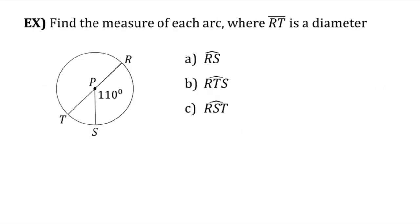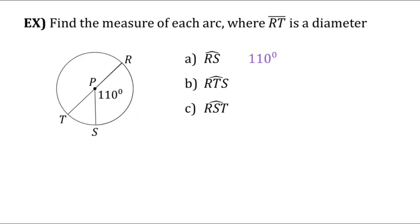Let's give this a try. Find the measure of each arc where RT is the diameter of the circle. First they give us arc RS, which is right here. As we can see, the central angle is marked for us — it's 110. So the measure of arc RS is 110 degrees.